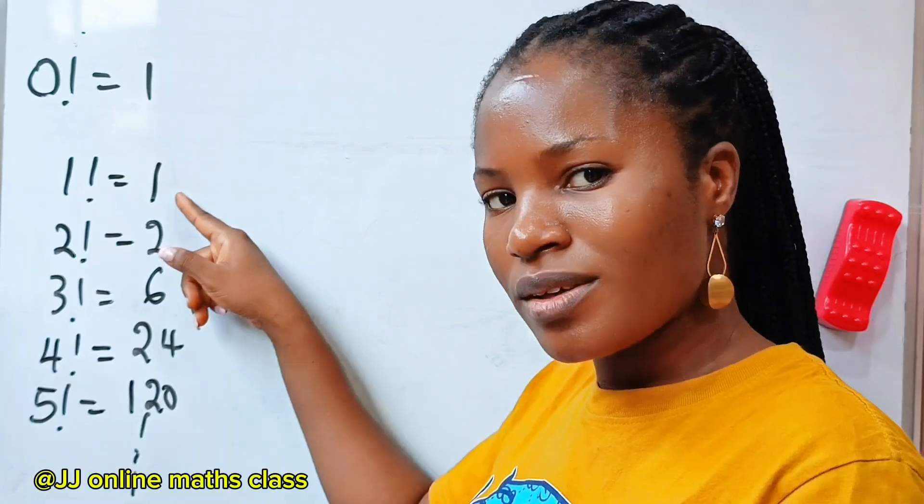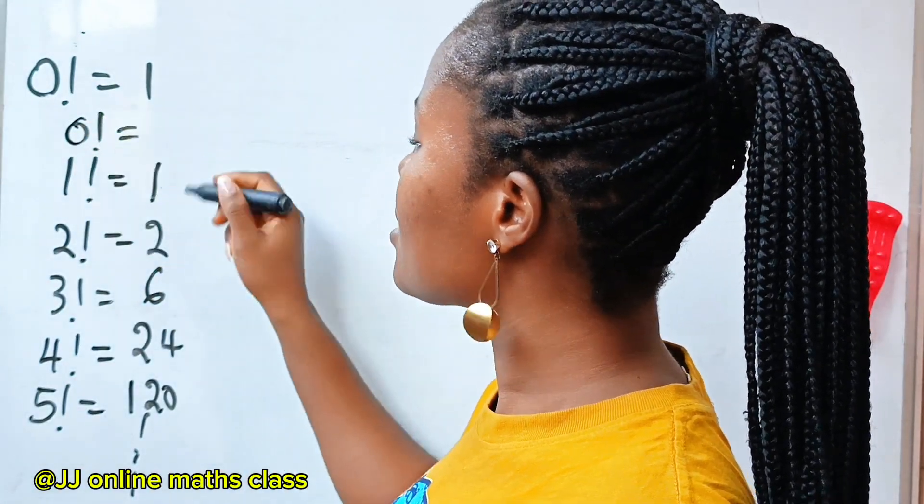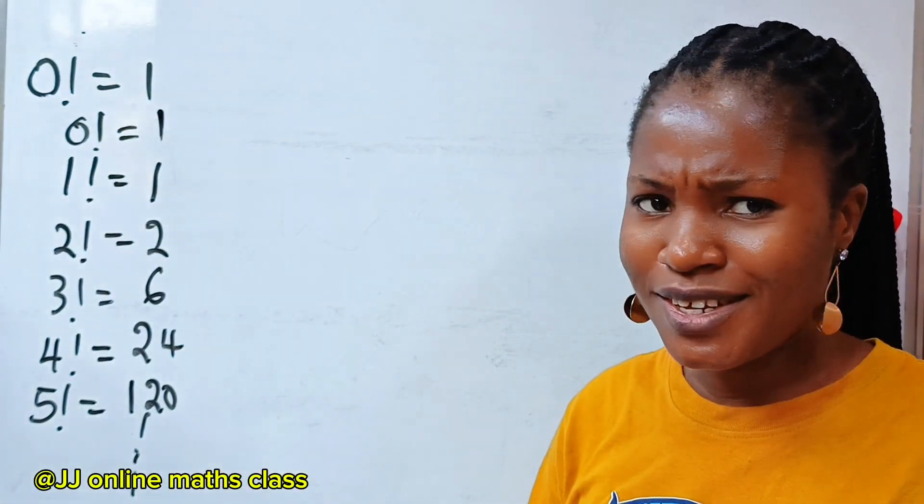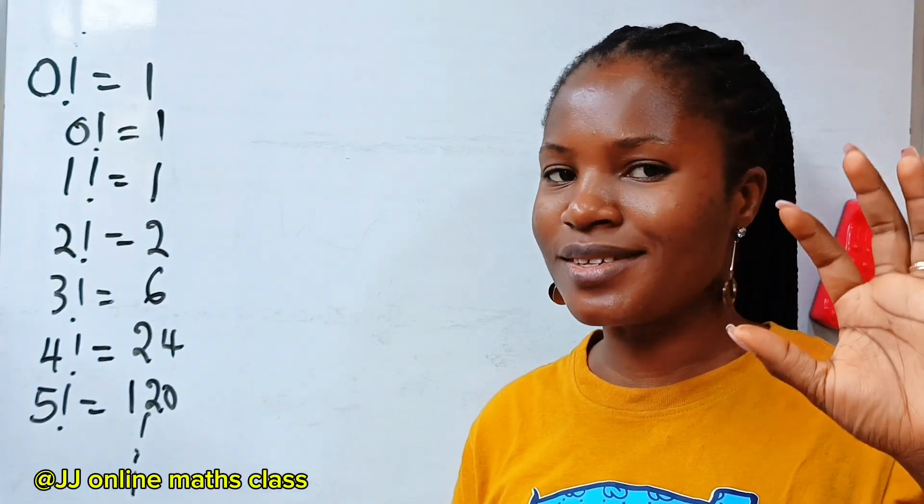So you see that this is a sequence. It is following a pattern. So that means that if we have 0 factorial here, the answer is going to be 1 divided by 1, which is 1. Can you see that? Yes, that is 1 reason.